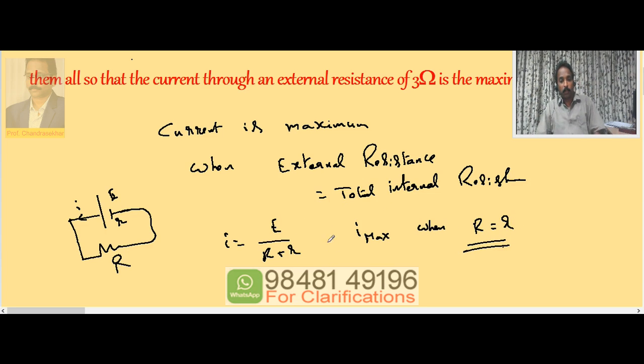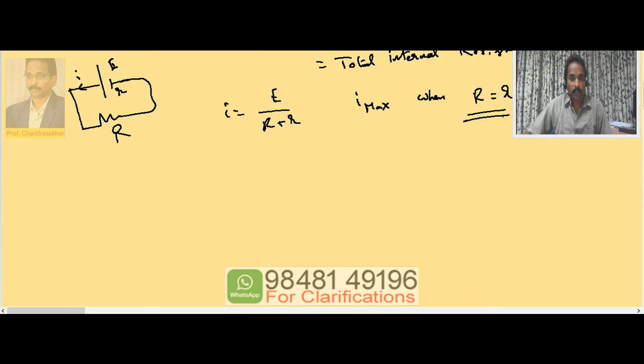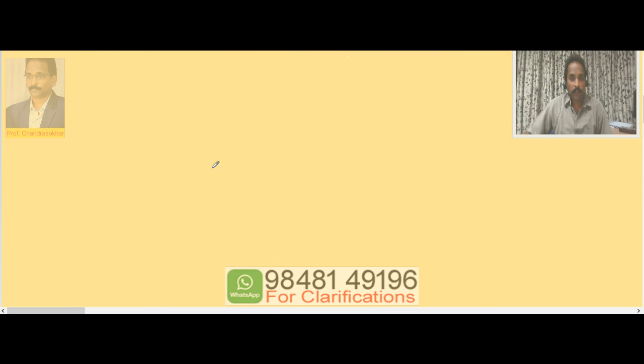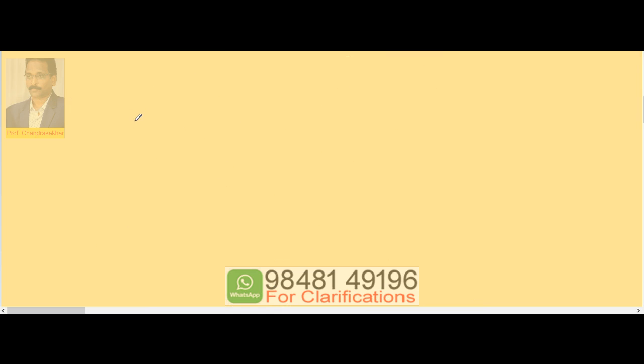This is the condition to observe the maximum current through the given circuit. Now here we have to use 48 cells, so let us imagine a mixed grouping - a battery consisting of n cells connected in series.